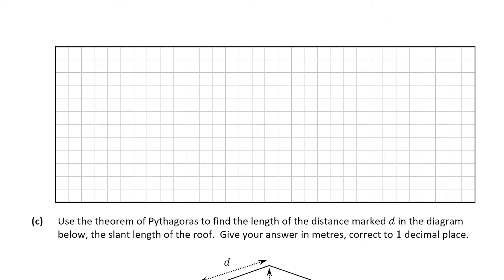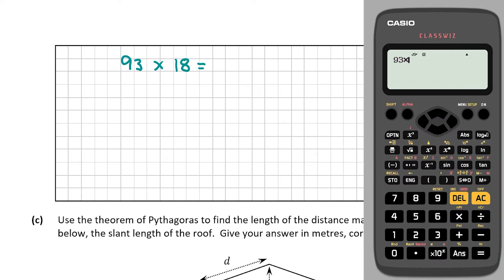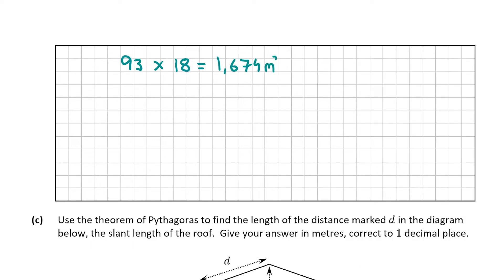The volume equals the area of the face times the length. We've worked out the area as 93 meters squared, and the length of the shed — how far back it goes — is 18 meters. So we multiply 93 by 18, which gives 1,674. The units are meters cubed since all measurements were in meters.